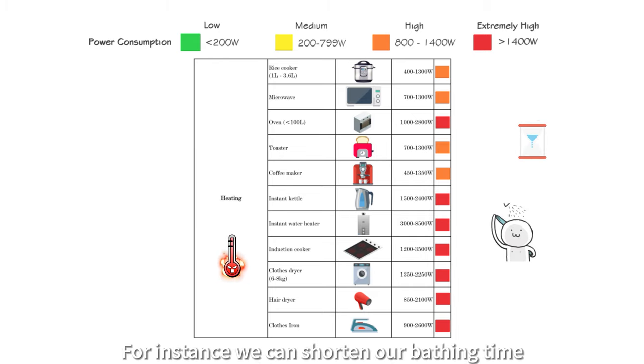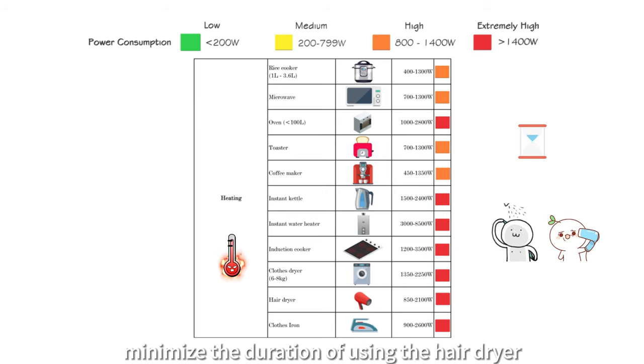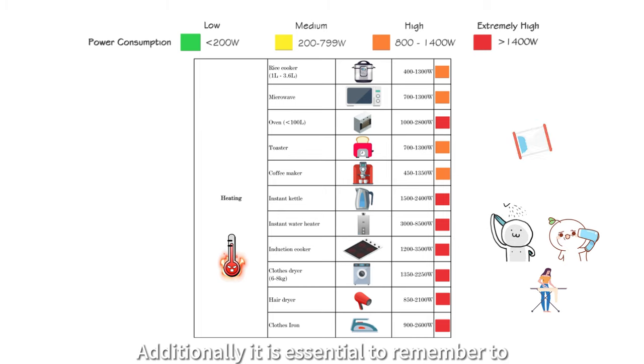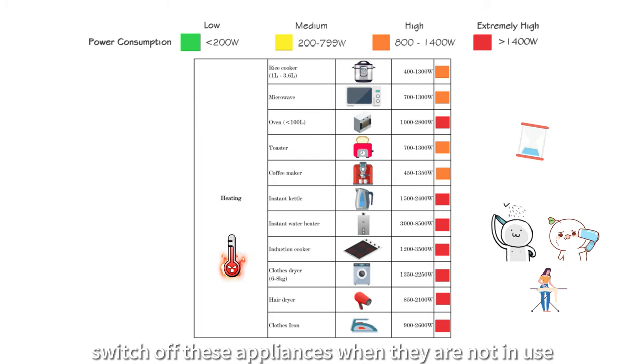For instance, we can shorten our bathing time, minimize the duration of using the hair dryer, or streamline our clothes ironing process. Additionally, it is essential to remember to switch off these appliances when they are not in use.